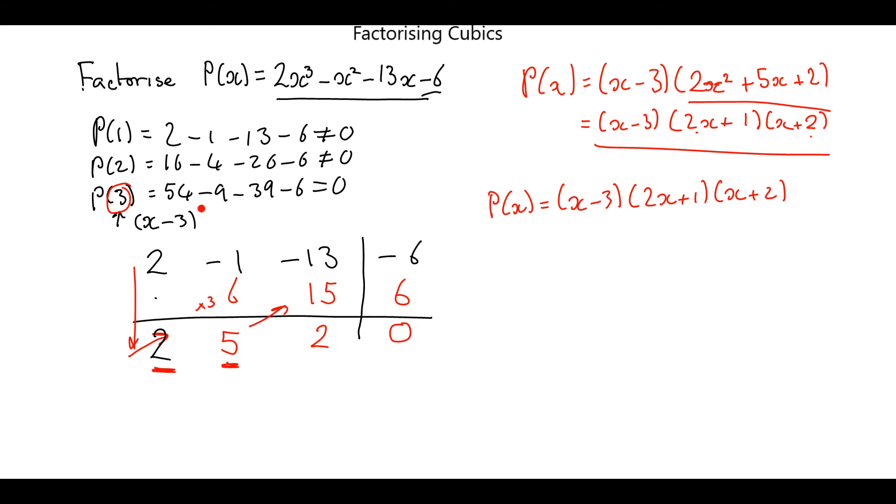When we found a root using the remainder theorem, that gave us one of our factors, the one that's over here. Once we did that, we used synthetic division by writing down the coefficients and the constants.